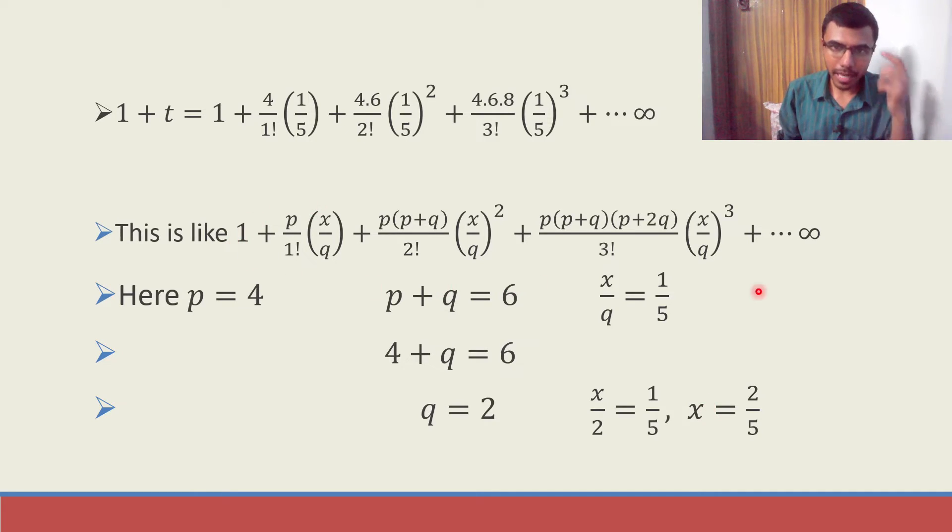Now this entire series is actually (1 - x)^(-p/q). You see this much big thing is nothing but (1 - x)^(-p/q). So this entire series also is nothing but (1 - x)^(-p/q).